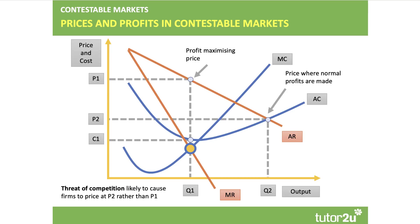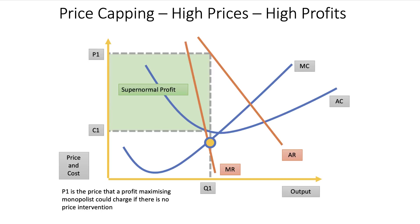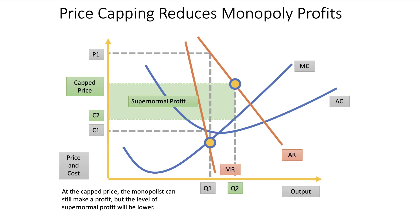If the firm thinks it can get away with a high price — where the threat of competition is low — they'll tend to charge a price closer to P1. Finally, price capping: a regulator may intervene in the market. The normal monopoly price is P1 and they're making a sizable profit. The regulator steps in and insists on a capped price — shown in green — at which the firm can still make a profit, but comparing with the profit before the cap, price capping in theory causes a fall in the total profit of the firm.